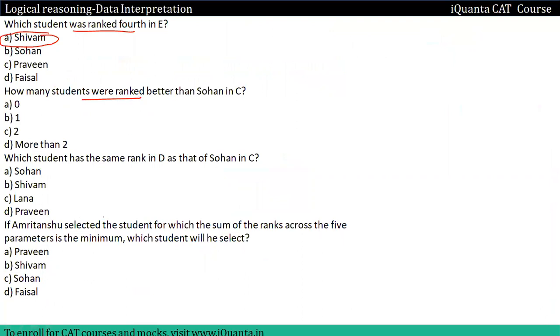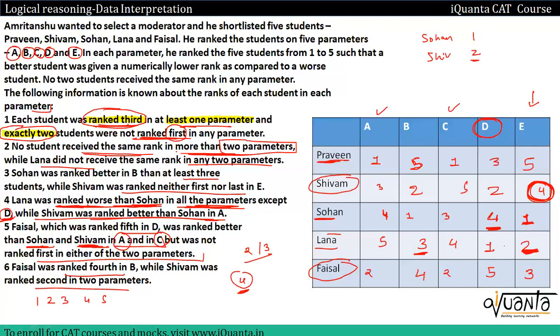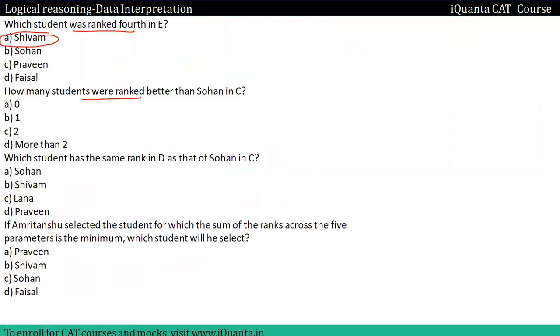Question: How many students were ranked better than Sohan in C? Sohan's rank in C is three, so there are two students ranked better than him. The answer is two — option C.